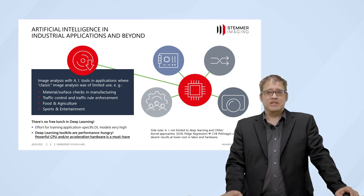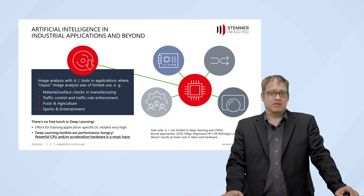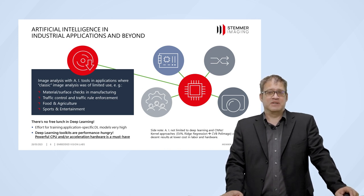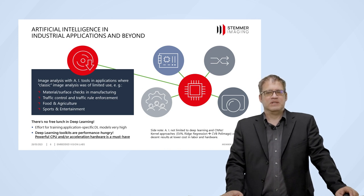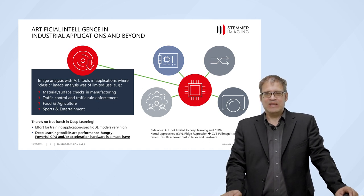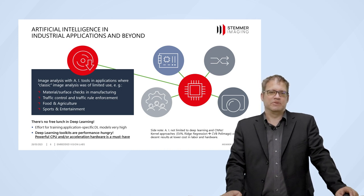There is, however, no free lunch in deep learning — you pay twice. You pay for the effort of training your deep learning model, unless you can make use of a pre-trained one, plus you pay in terms of hardware, because deep learning toolkits are usually very performance hungry. They absolutely require either a powerful CPU or dedicated acceleration hardware, or possibly even both. There are also options beyond deep learning and CNNs for lower performance requirements.